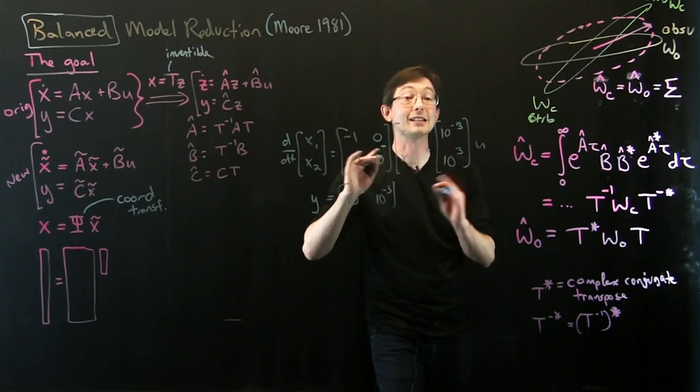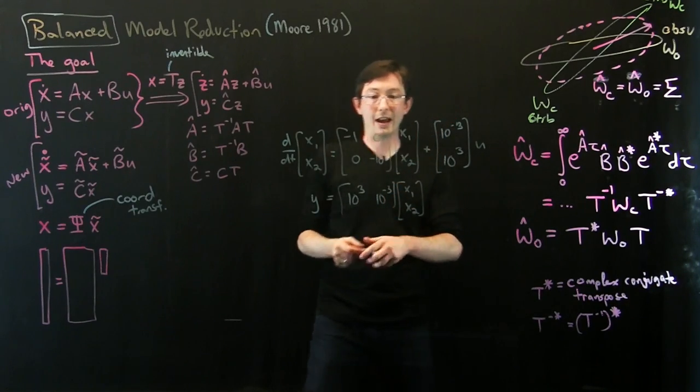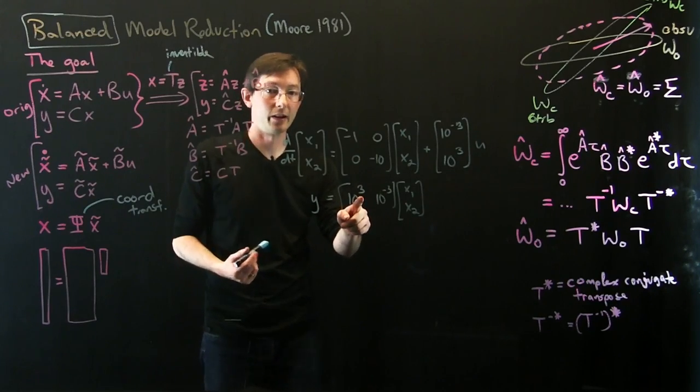And then I'm going to have my measurement y equals 10 to the 3, 10 to the minus 3. So in this case, it's the exact opposite.